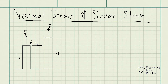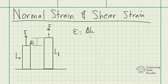The deformation — how much it changed in length — will be delta L. Normal strain is denoted by epsilon. Normal strain is equal to the change in length divided by the original length. In other words, it's essentially a ratio.